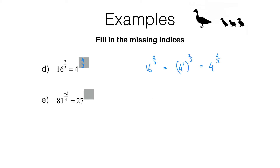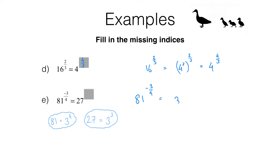Moving on to question e. Now this one is a little bit trickier, because we can't write 81 as a nice easy integer power of 27. What might be easier however is spotting that both of these are powers of 3. So I'm just going to note some facts: 81 is 3 to the power of 4, and 27 is 3 to the power of 3, or 3 cubed. What we can do first is rewrite this with a base of 3. So 81 to the negative 3 quarters is 3 to the power of 4, all raised to the negative 3 quarters, and that's going to equal 3 to the power of 4 multiplied by negative 3 quarters. 4 times negative 3 quarters gives us negative 3.